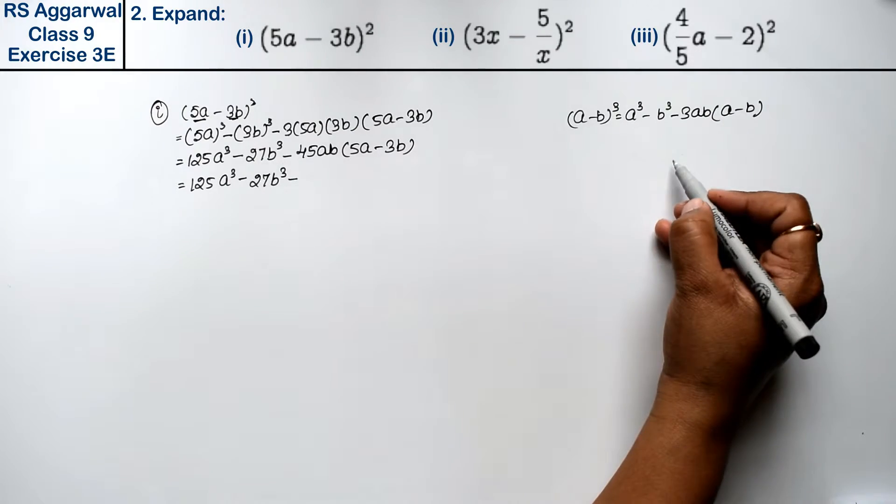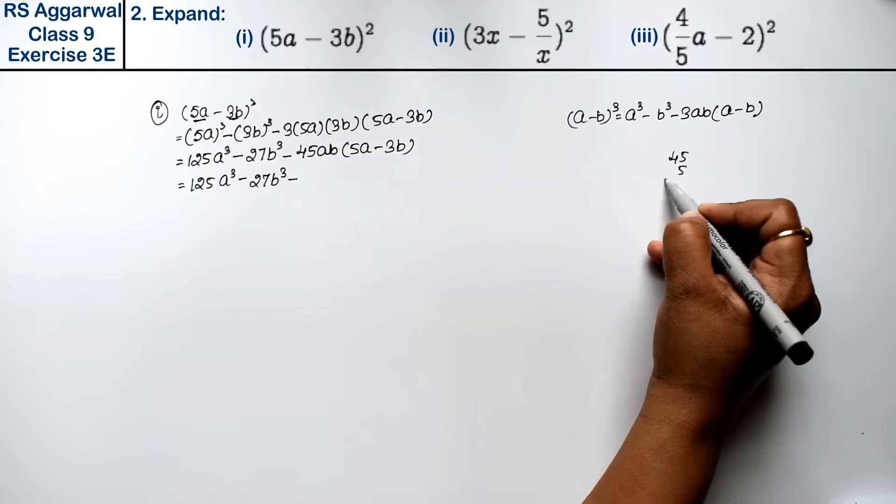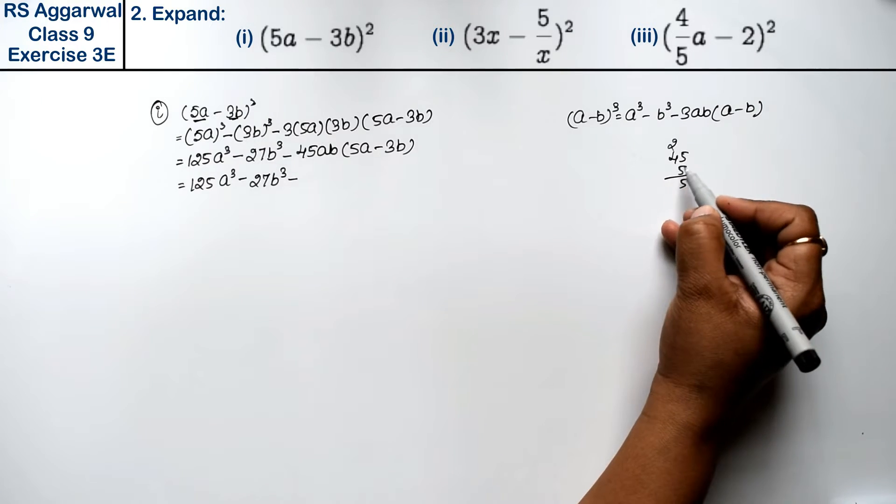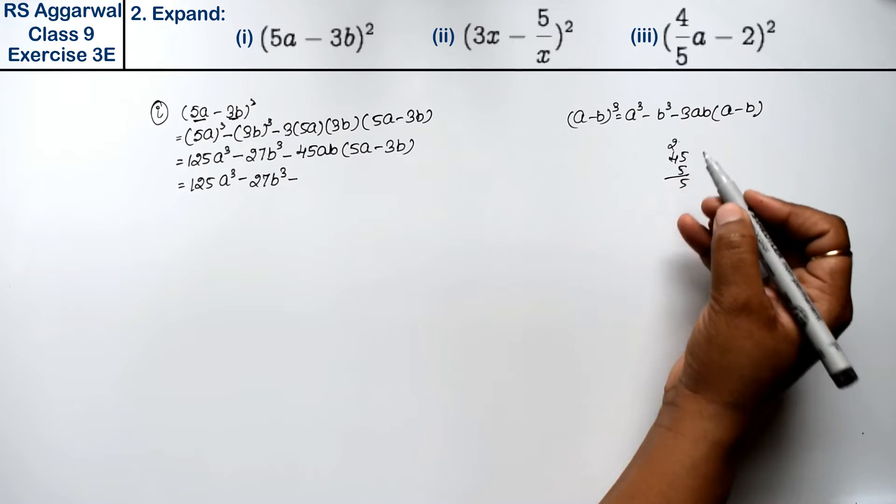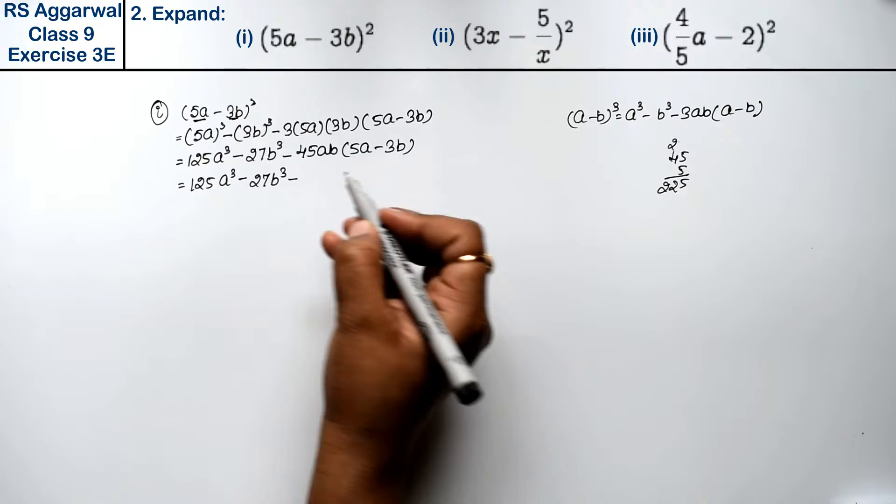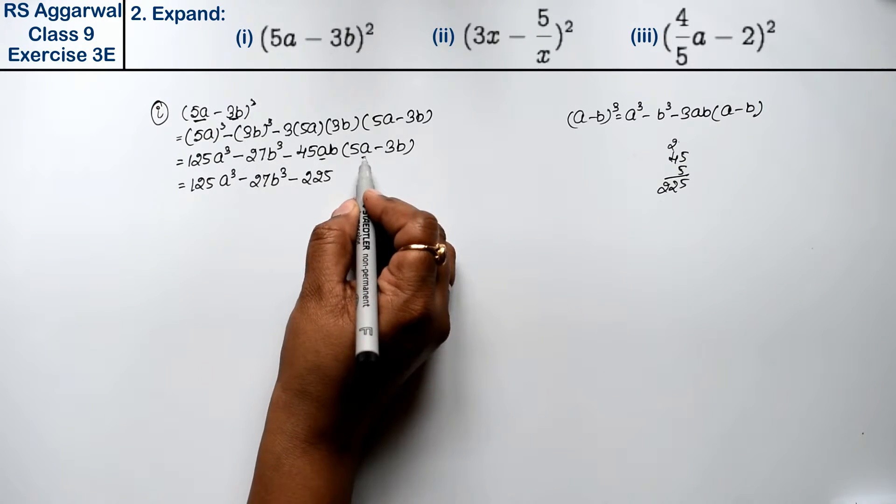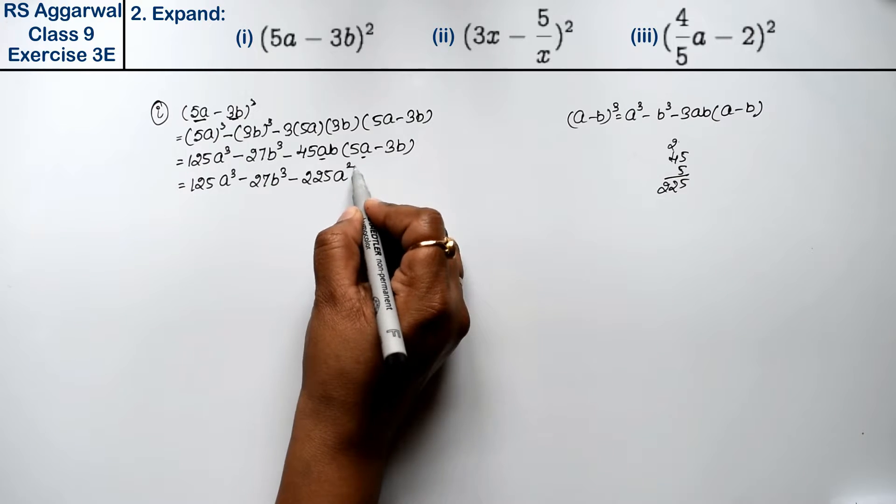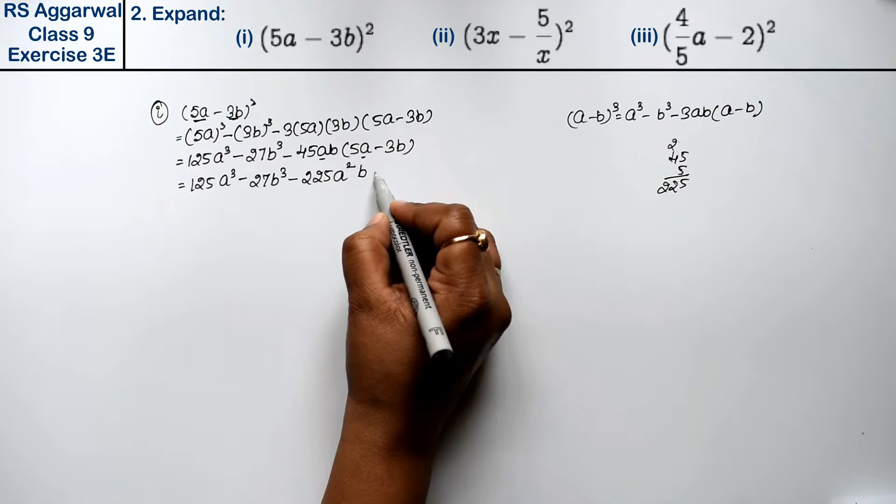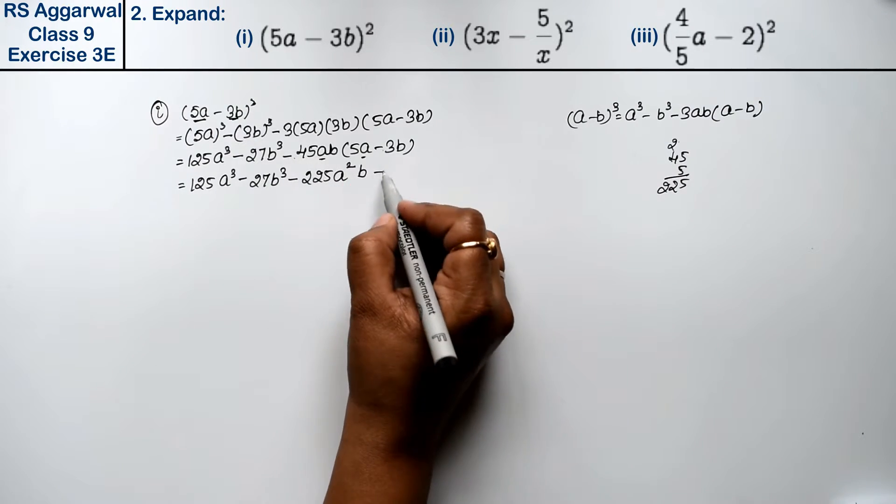5×5 is 25, 5×5 is 25, 5×4 is 20, 22, right friends. Toh 125a³ minus 27b³. A ki multiplication A, toh a ki power increase hogay, 2 hogay b. Minus minus minus minus plus.